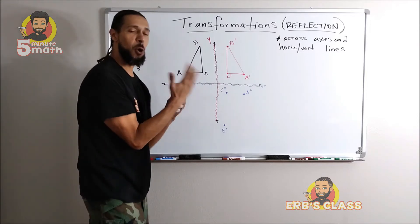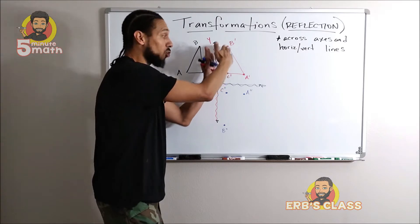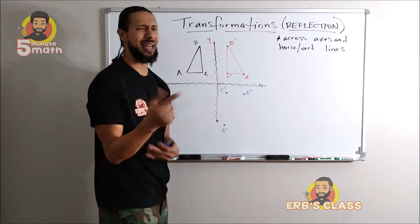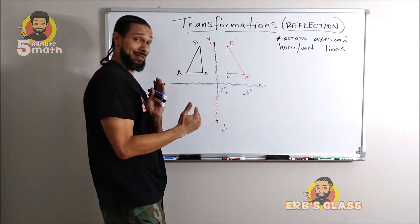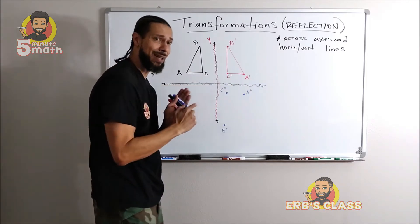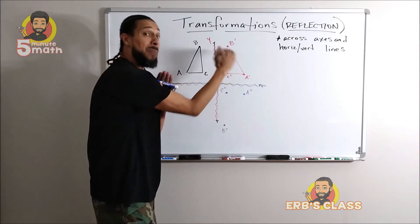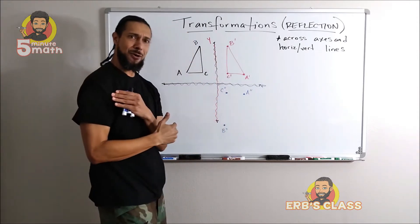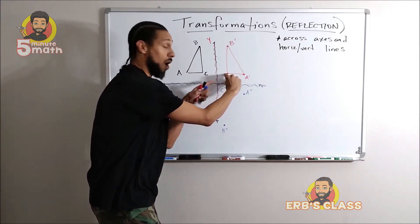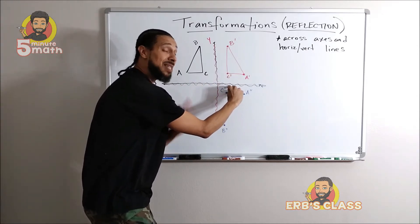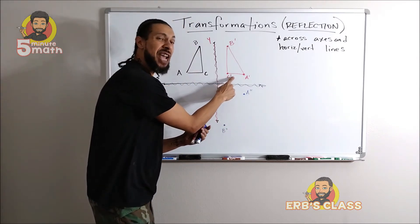Now I'm taking my red triangle and reflecting it across the x-axis. Notice I have my horizontal x-axis highlighted now. I'm going to take this and reflect it across — so whatever used to be above this axis will now be below. Remember those distances: here's the distance from C prime to the mirror, and it must be the same distance on the other side of the mirror.